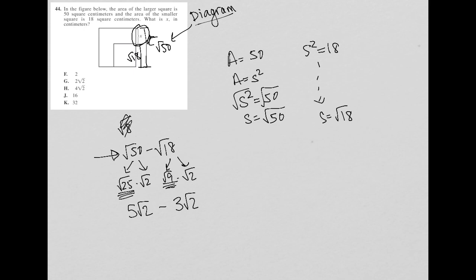And 5 root 2 minus 3 root 2, that can be simplified because they both have this root 2. It kind of makes them like terms, basically. So 5 square root 2 minus 3 square root 2 is 2 square root 2. And therefore, that is what x is equal to. And therefore, our answer is choice G.